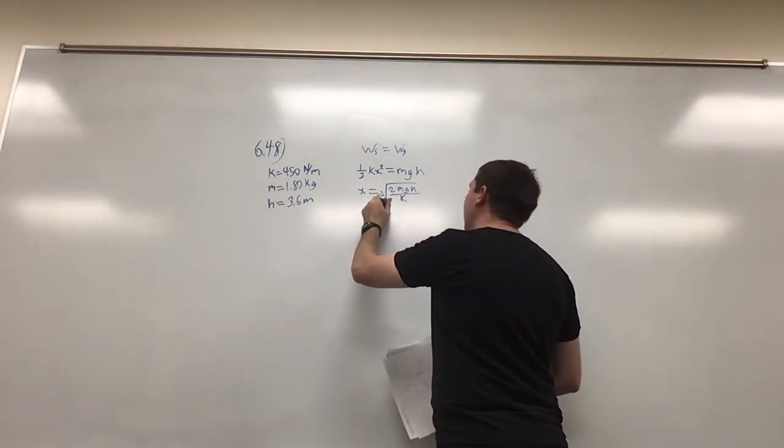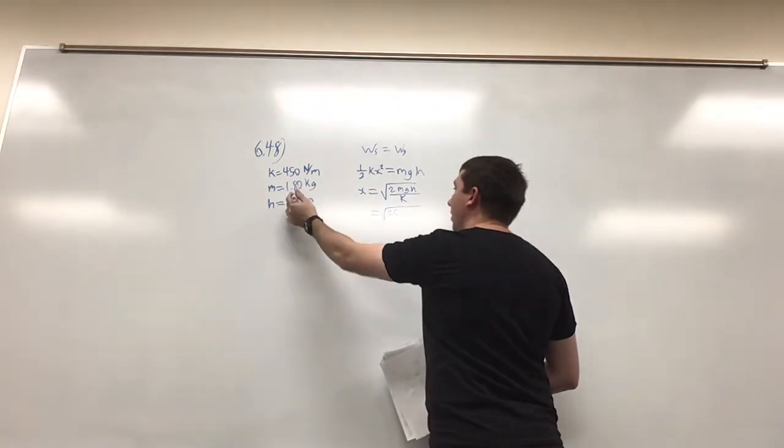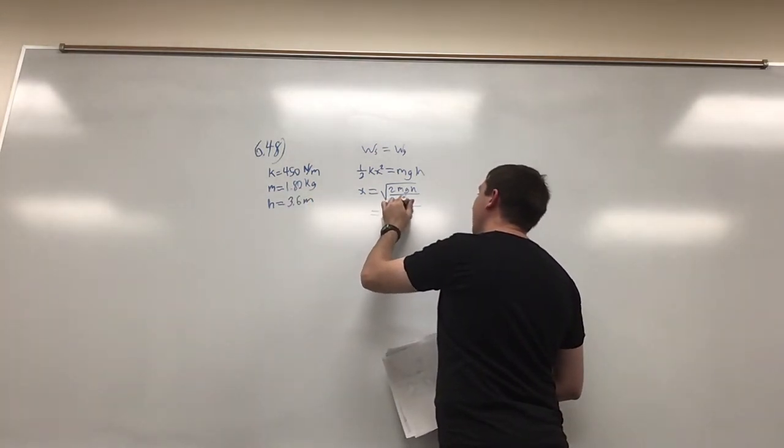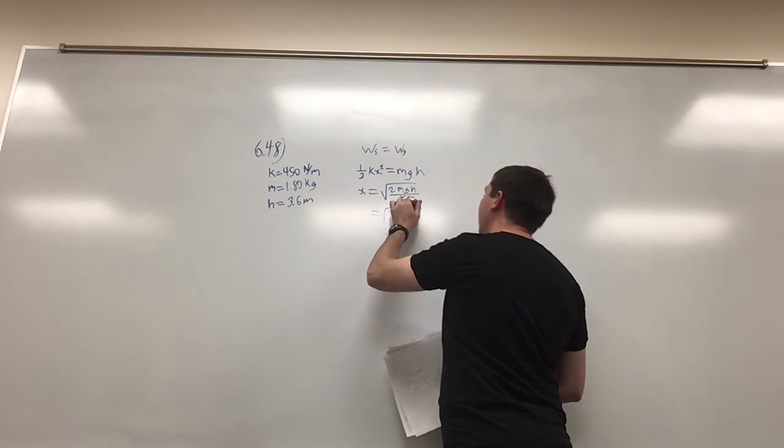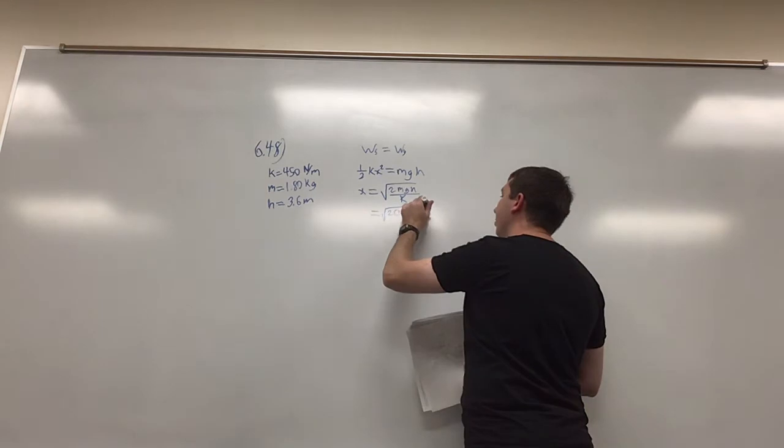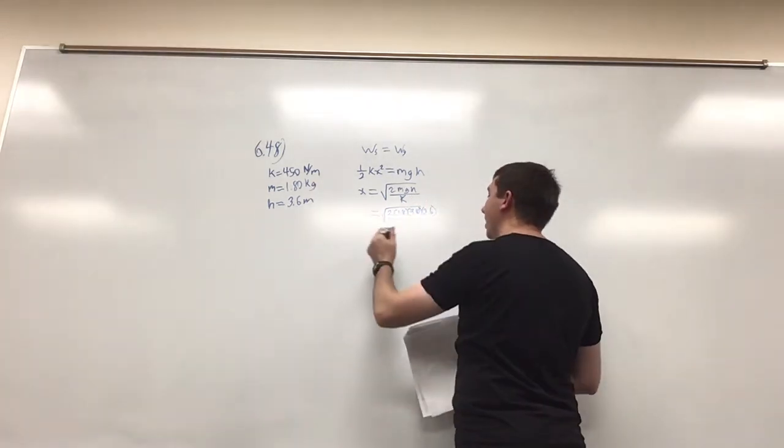We then plug in the numbers. So it's going to be 2 times our mass, 1.8 kilograms, times gravity which we know is 9.81, times the height 3.6 meters, all of that divided by 450, and then the square root of the whole thing.